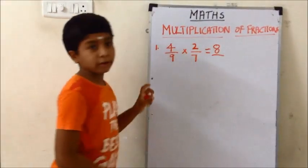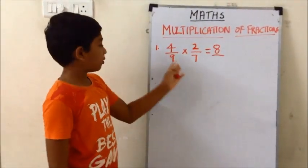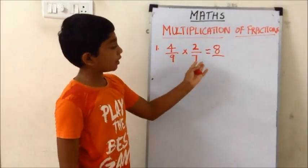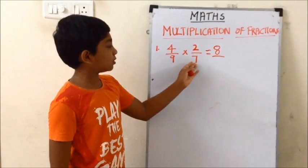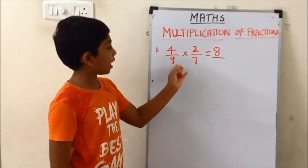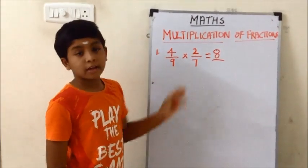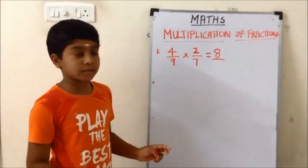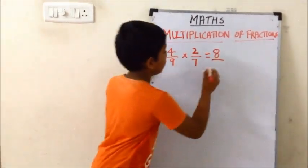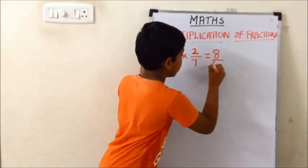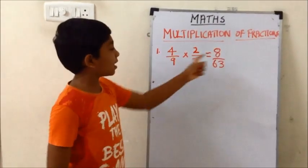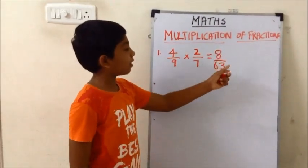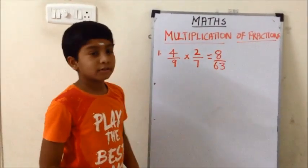Now we need to multiply the denominators. 9 into 7 is equal to 63. So the answer is 8/63.